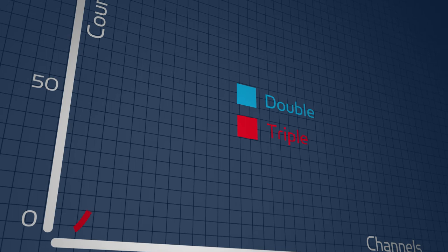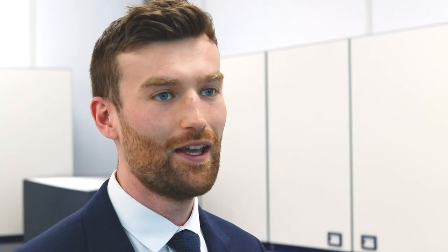This gives us a smaller triple count spectrum and a larger double count spectrum, because we have more accumulation on the doubles than the triples. So that's triple to double coincidence ratio. If you require any further information, or would like an on-site visit or virtual demo, please don't hesitate to contact us.